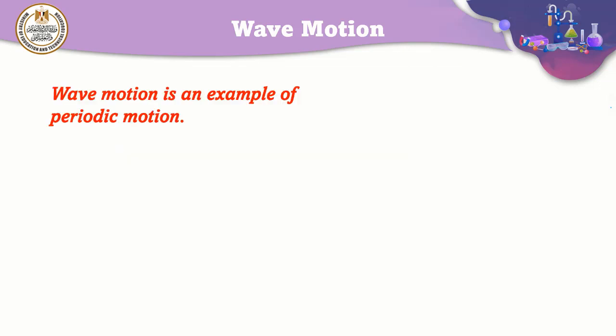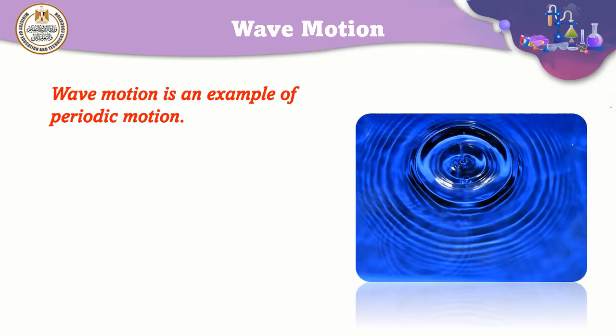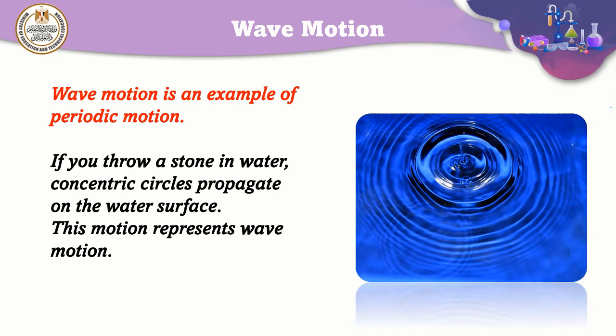Let's see what is meant by wave motion. Wave motion is one of the examples of periodic motion. We have studied before the oscillatory motion as the first example, and the second example is our lesson about wave motion. To know more about wave motion, remember: if you throw a stone in water, circles of water will propagate beginning from the center towards the water edges. This motion represents simply what is meant by wave motion.